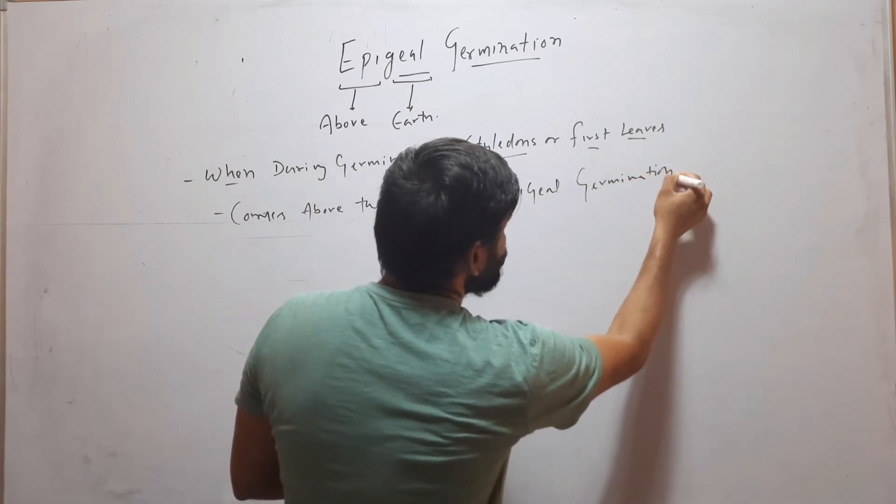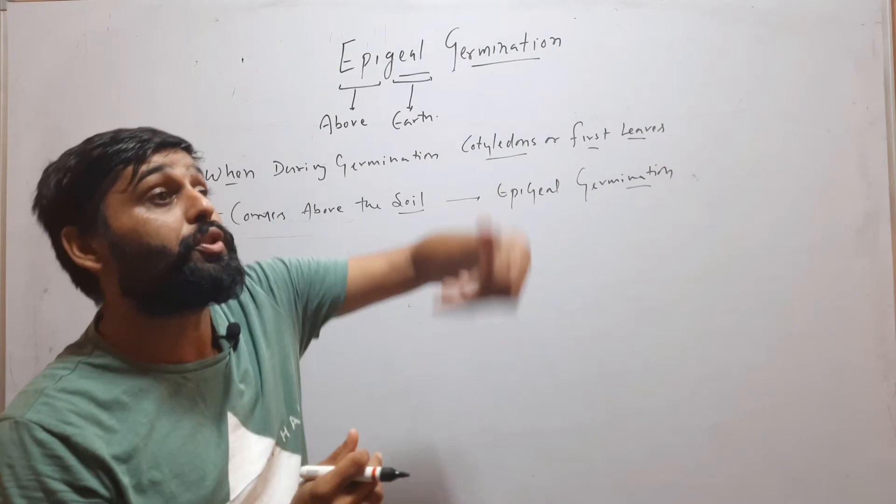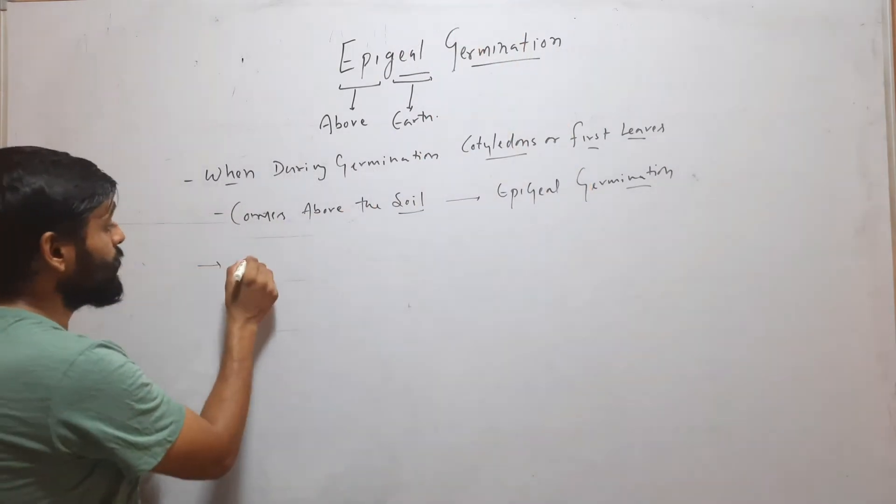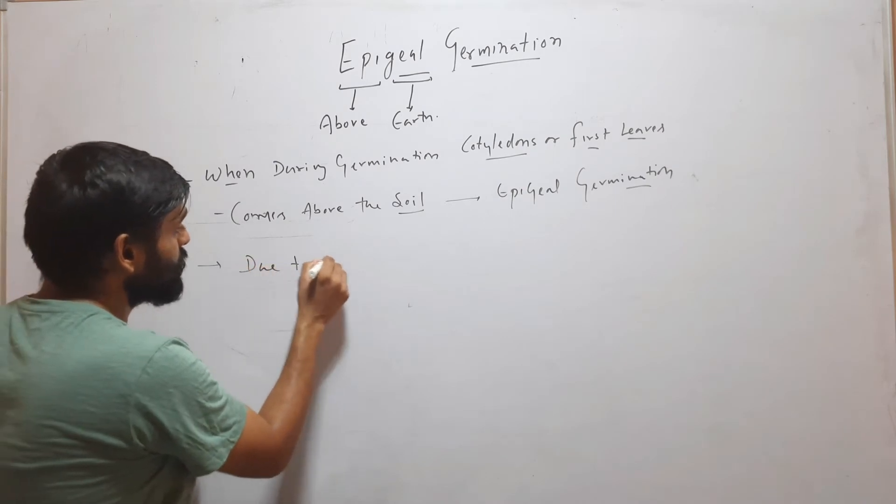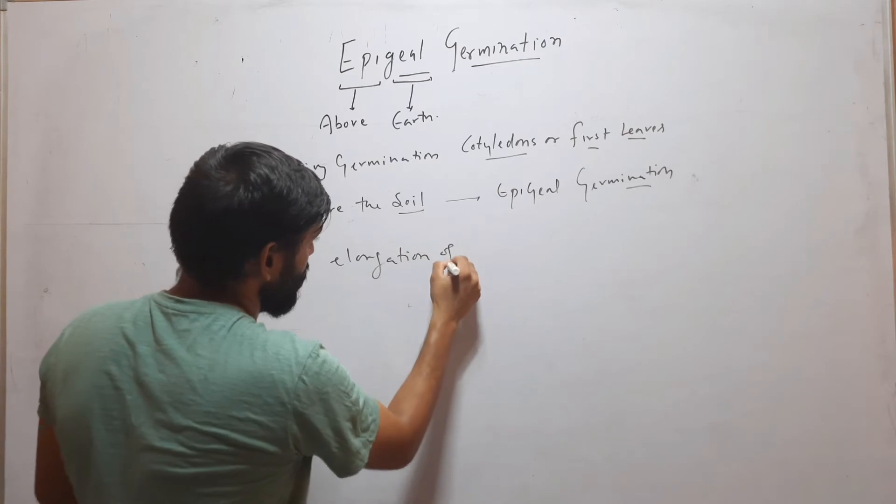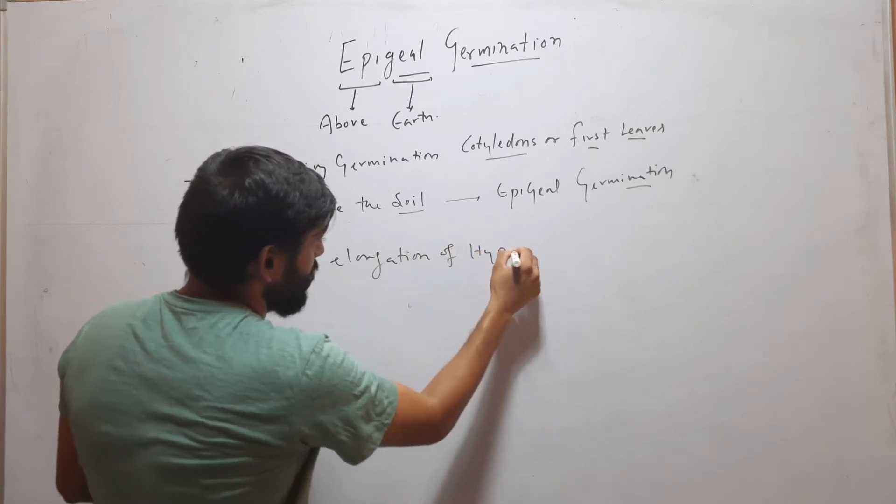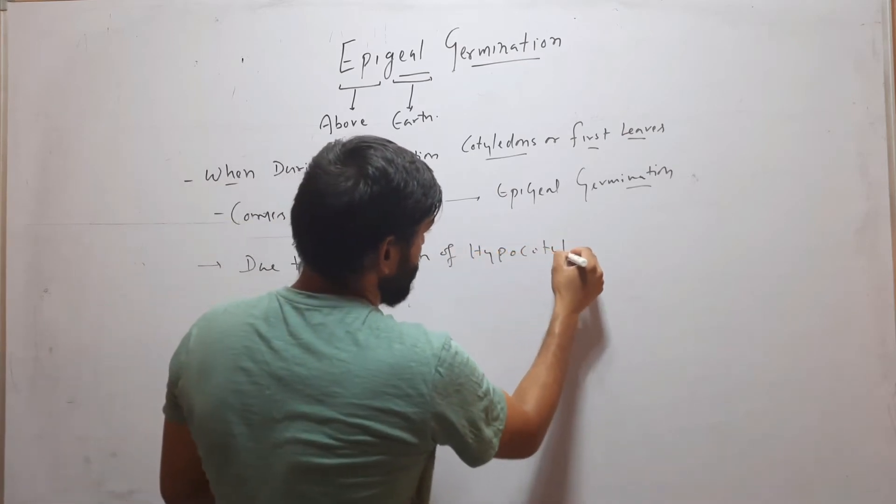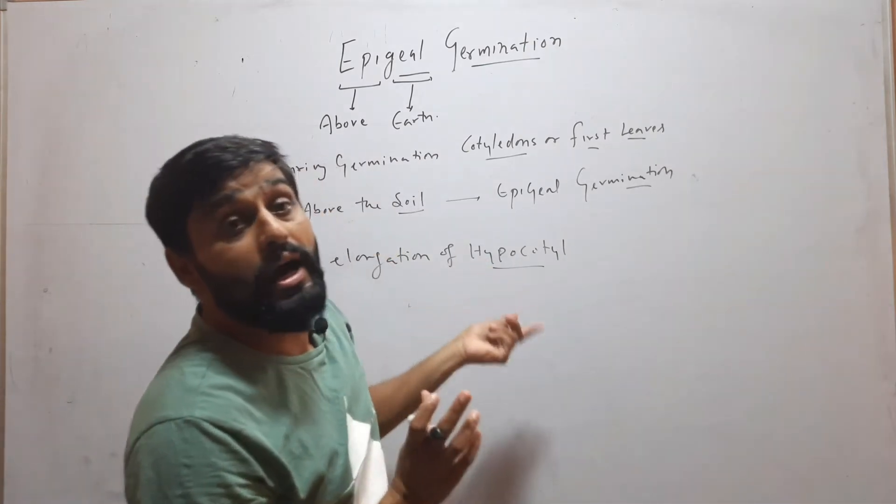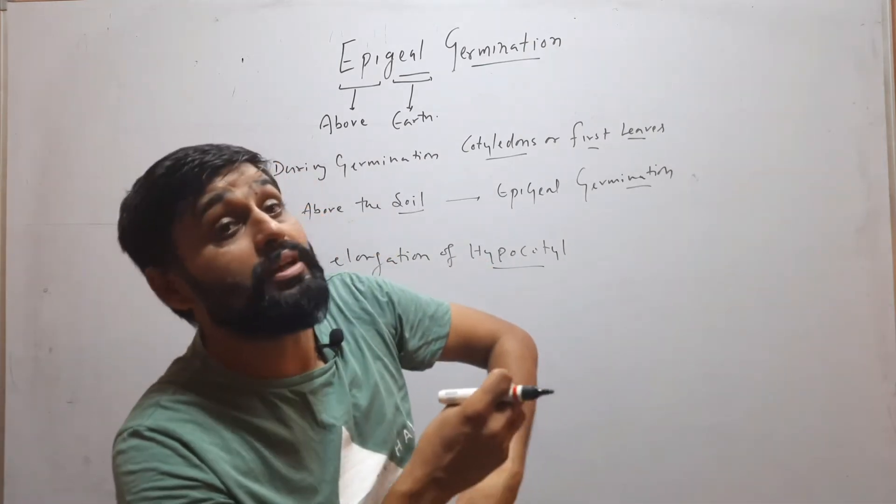How will these cotyledons come above the soil? They will come above due to elongation of hypocotyl. The hypocotyl will elongate and due to this elongation, cotyledons will come out of soil.